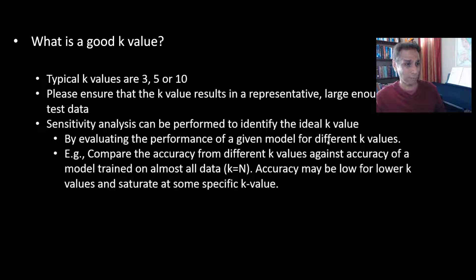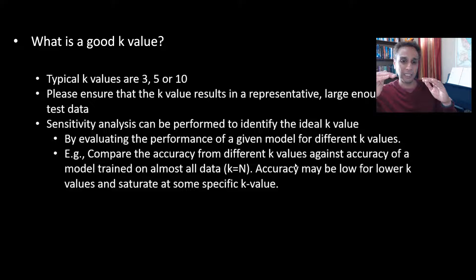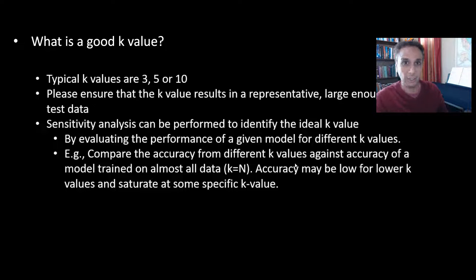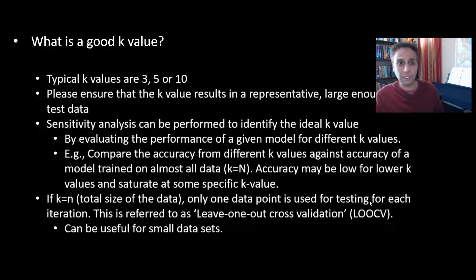You train the model on your entire data as a benchmark, then plot performance across different K values. At some point — say K equals 10 — the performance becomes the least noisy, so you pick that. If you set K equal to N (e.g., 1,000 data points, K equals 1,000), only one data point is used for testing per iteration. This is called leave-one-out cross-validation, which makes sense for small datasets.